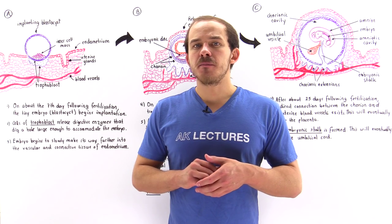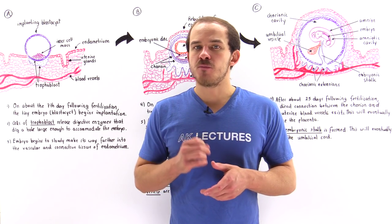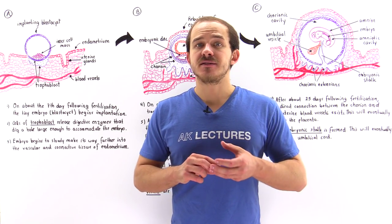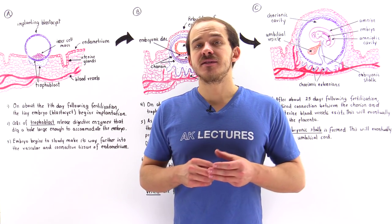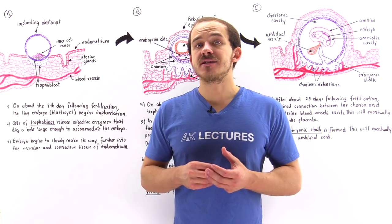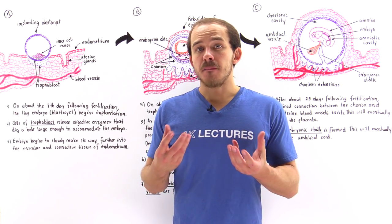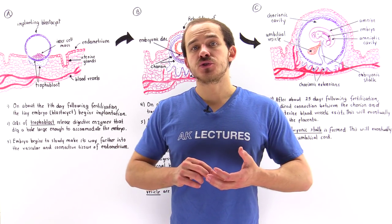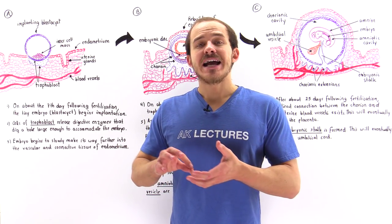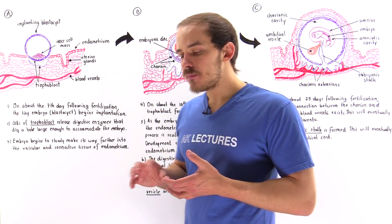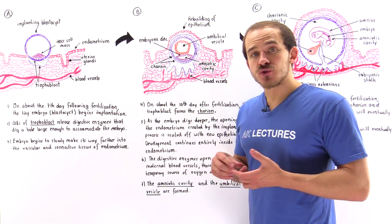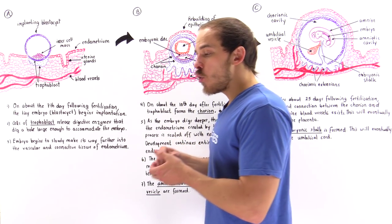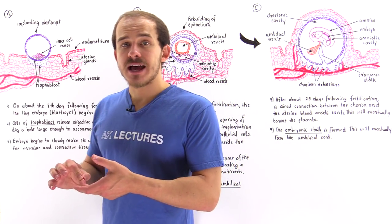A blastocyst consists of three important structures. We have the blastocele, which is the hollow cavity inside the blastocyst that contains a nutritious fluid needed by the developing embryo. We also have a structure known as the trophoblast and the inner cell mass. The cells of the trophoblast eventually give rise to a structure known as the chorion as well as the placenta.